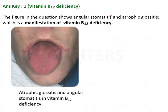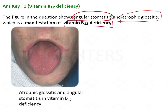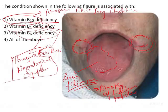So the figure in the question shows angular chelitis or angular stomatitis along with atrophic glossitis, right? And that is the manifestation of vitamin B12 deficiency. Hence the answer is option one.